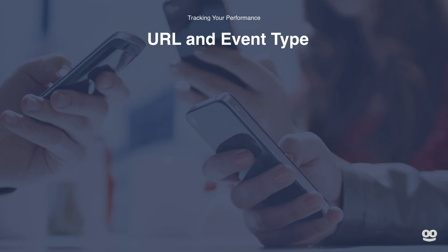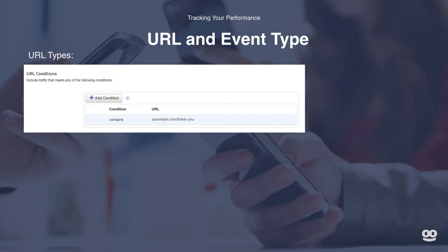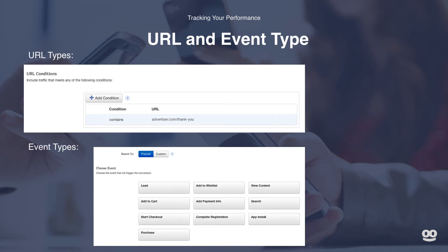What are URL and event types? We have URL conditions and event types available for you to select. URL types are easy to implement and great for tracking page views or static landing pages — all you need to do is create a condition by which it picks up a portion of the URL string. Event types create an additional strip of code to place, so it's a little more tricky than the standard URL conversion, but it offers much more dynamic tracking capabilities. Event type buttons can be placed on many different sources like video views, page scrolls, or even specific CTAs themselves.